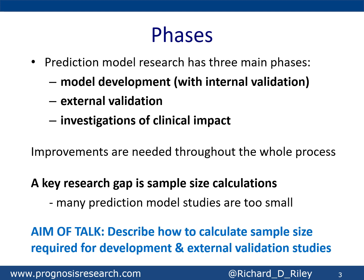Prediction model research has three main phases: the model development phase where the actual prediction model is produced — i.e. the equation is derived; external validation, where the performance of the model is checked in new data, sometimes from a different population; and the last one is where the model's impact on health outcomes is evaluated. Unfortunately, lots of evidence shows that prediction model research is often substandard, and improvements are needed throughout the whole process, with a major area being sample size.